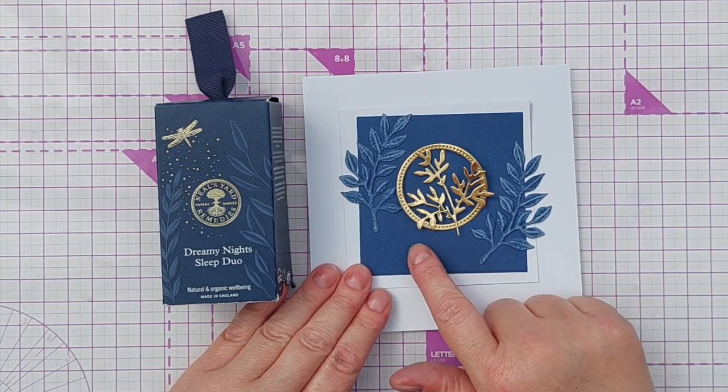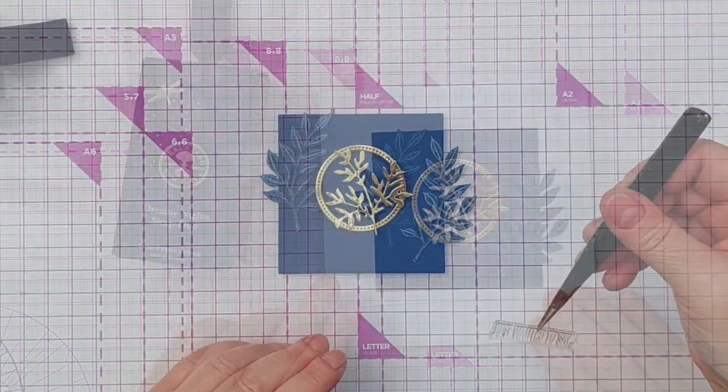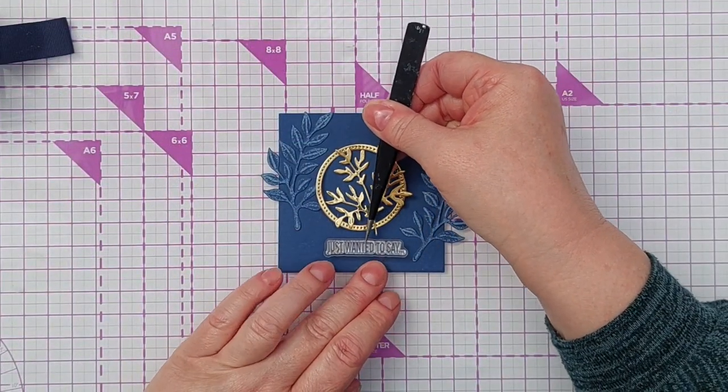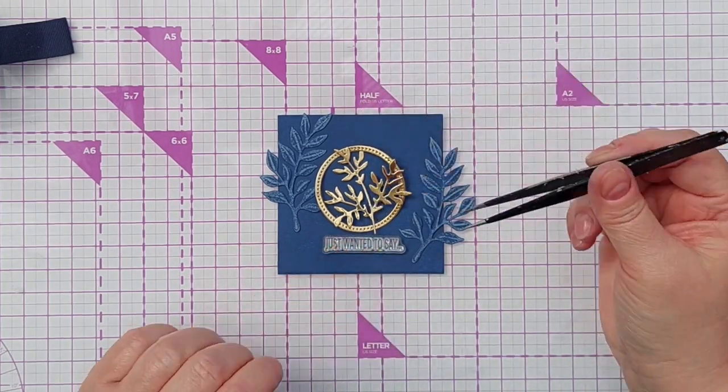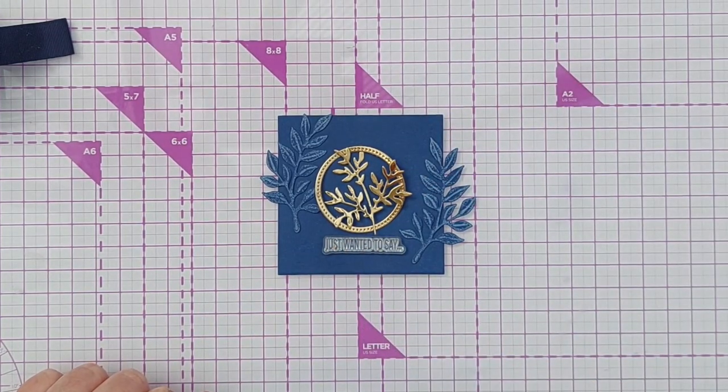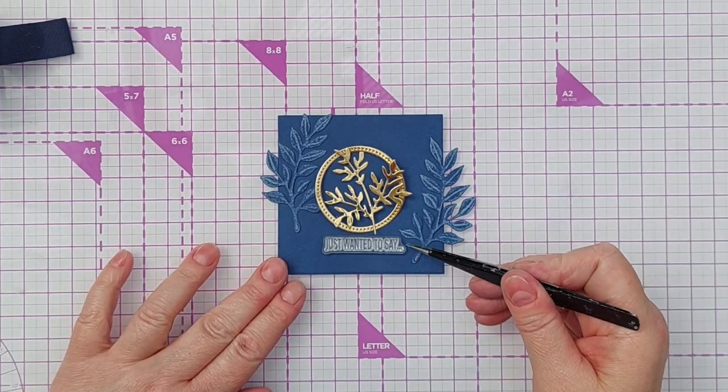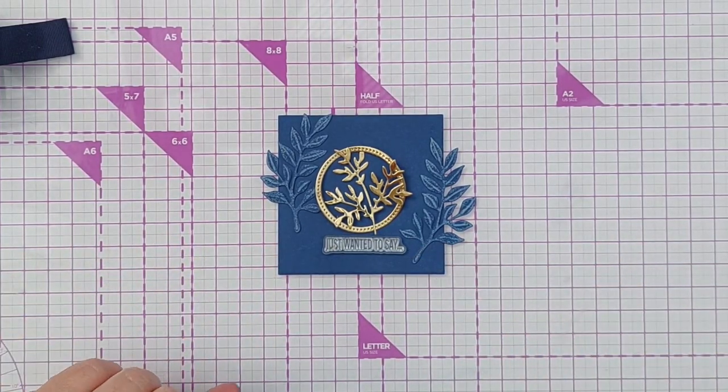So I think I'm going to stamp a sentiment around about there and to make this card really multi-functional or any function you like, I think I'll use this just wanted to say dot dot dot sentiment and heat emboss it in white embossing powder.